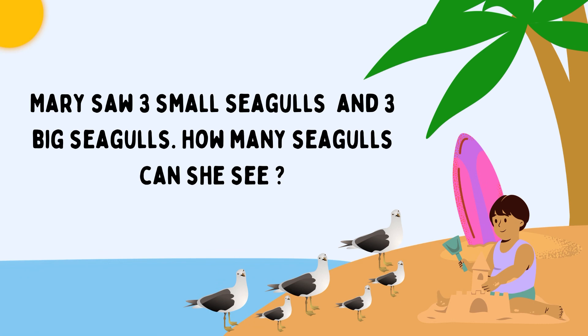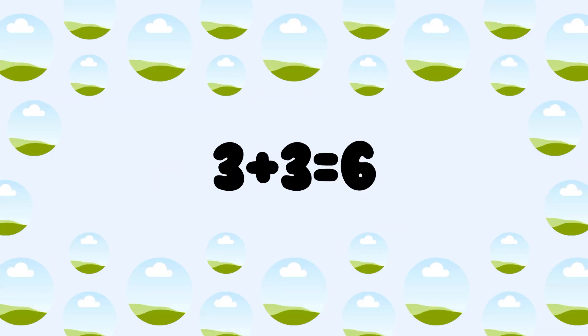Mary saw 3 small seagulls and 3 big seagulls. How many seagulls can she see now? 3 small seagulls plus 3 big seagulls. 3 plus 3 is equal to 6. Mary can see total 6 seagulls.